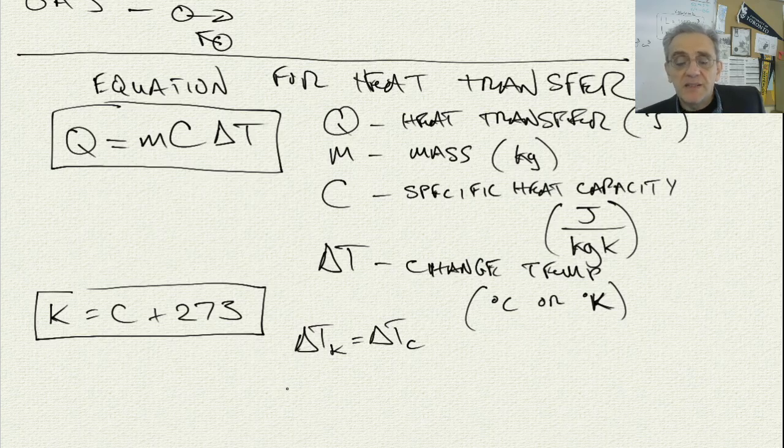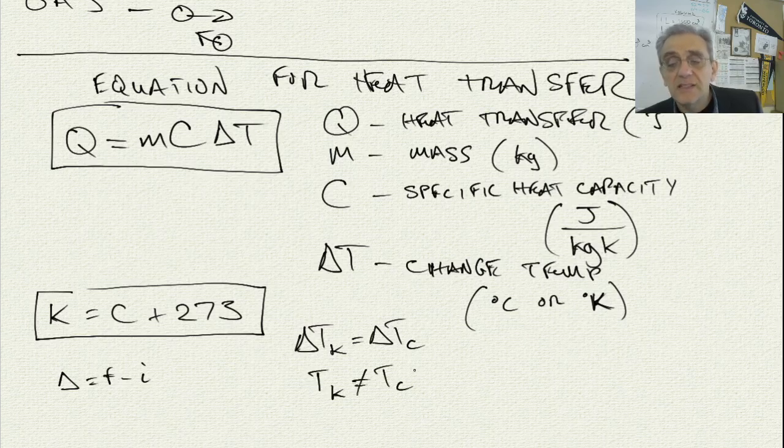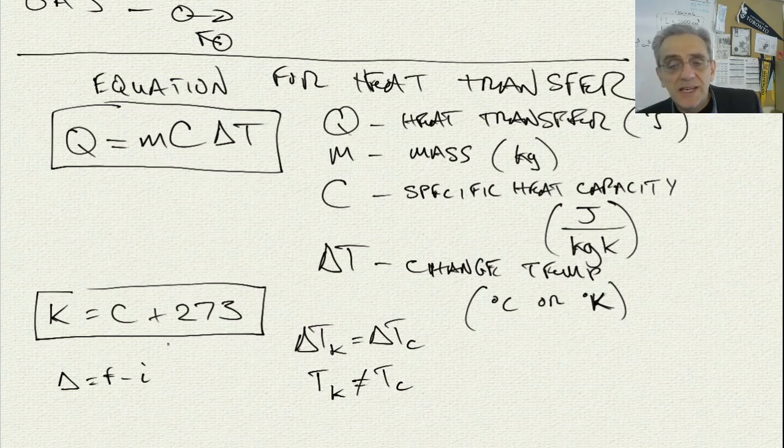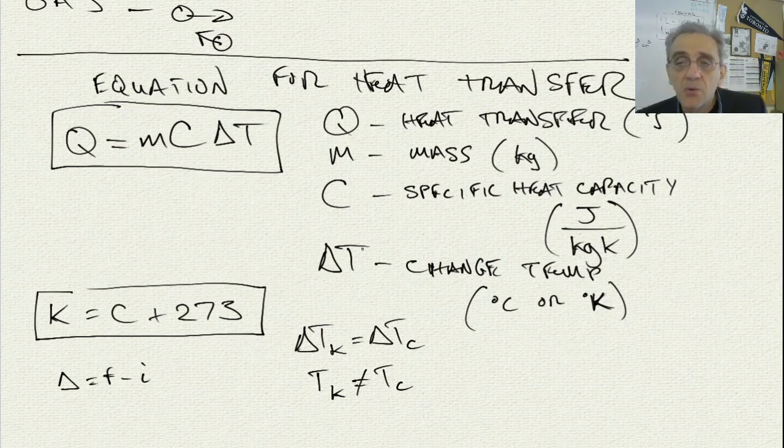Why is that? It's because delta Kelvin is equal to delta Celsius. Because remember what delta is. Delta is equal to final minus initial. So it doesn't matter if you add 273 to each side. Obviously Kelvin does not equal Celsius, but the delta does, because when you're going final minus initial, it's the same. It doesn't make a difference. So essentially, if you know the final and the initial Celsius, you can use Celsius. If you know the final initial Kelvin, you can use Kelvin. Either way will give you the correct answer because the change is the same.